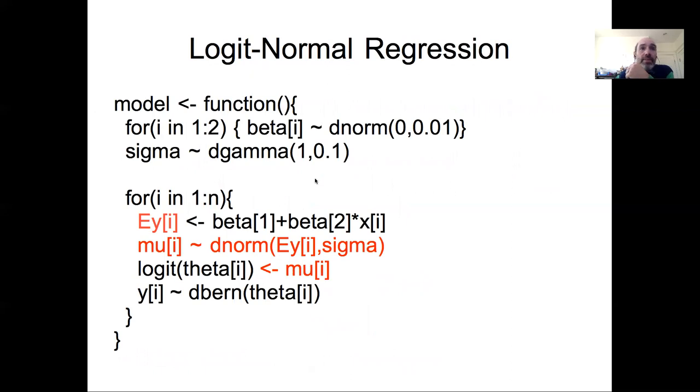How we implement this in code looks very similar to both our logistic regression and our normal regression, in the sense that we have a prior on beta, we have a prior on sigma, we have a calculation from our process model of the expected value of y being our x beta. Now we have a mu being distributed normally around that expected value with some sigma. We then logit transform that mu into a theta and then use that in the Bernoulli, so we have both the sigma variability as a process error and the Bernoulli variability as an observation error.